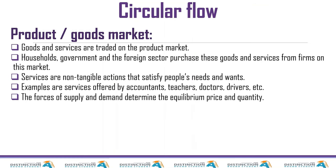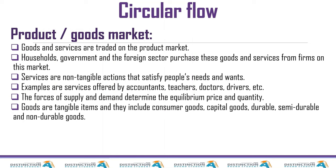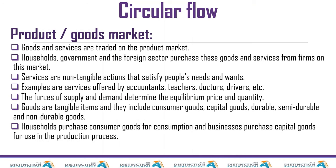In this market, when we buy a fruit for two rands, no one has really decided on that price — it is the forces of demand and supply. Goods are tangible items and they include consumer goods, capital goods, durable goods, and non-durable goods. Households purchase consumer goods for consumption, and businesses purchase capital goods for use in the production process. So already we see a distinction between consumer goods and capital goods, but we'll go into more detail.